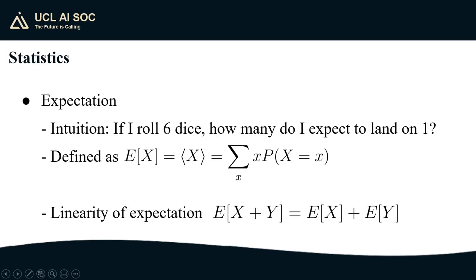With probabilities defined we can now talk about expectations. If I roll six dice how many do I expect to land on one? I think most of you would agree the answer is one. Expectation calculation allows us to prove this rigorously. Firstly we know that the expectation of a random variable is just the sum of the value that it takes for a certain outcome times the probability of that outcome. Secondly we note that expectation is linear. That is the expectation of x plus y is going to be the expectation of x plus the expectation of y. We can combine these two properties to prove our intuition.